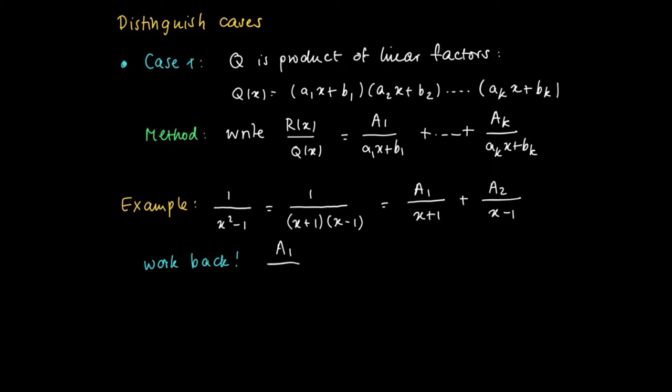Well, we're going to do this by working back. So we bring everything on the right-hand side back onto the standard form where we have denominator (x+1)(x-1). So we may do so, but then the numerator changes into A₁(x-1) + A₂(x+1). So now we work back, and this expression that we obtained should be equal to 1/(x²-1).